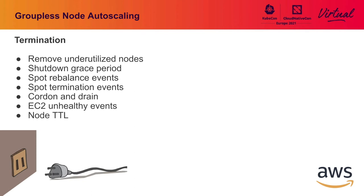We're not just responsible for bringing up nodes — we're also responsible for terminating them. As part of the reallocator controller, we look at nodes that don't have any pods scheduled to them anymore and apply a TTL. If those nodes don't get any pods scheduled to them for a period of time — which we default to five minutes — those nodes are eventually scaled down. We also respond to other events like EC2 unhealthy instance notifications, where we drain the node as quickly as possible and try to heal the situation.